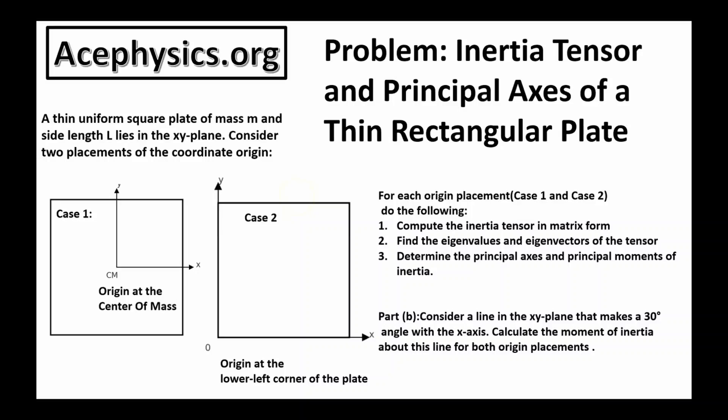To begin I just want to read the problem that we're going to be solving today. A thin uniform square plate of mass M and side length L lies in the XY plane. Consider two placements of the coordinate origin. In case one the origin of the coordinate system is placed at the center of the plate. This is the y-axis and this is the x-axis.